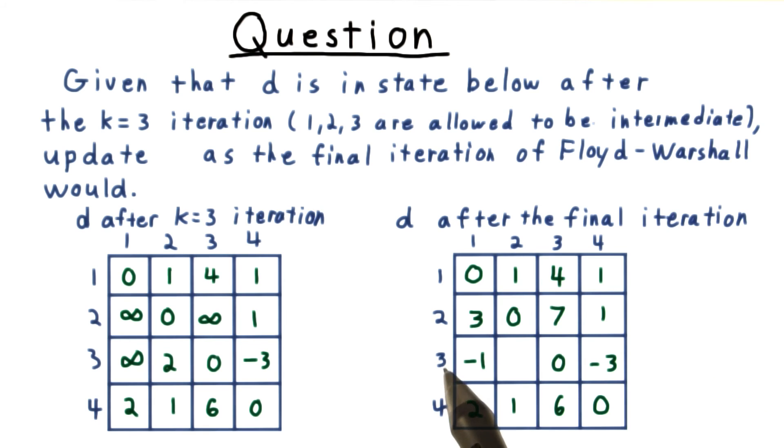Lastly, we have that going from 3 to 2 used to cost 2, but we can improve on that by going to 4 first, which costs negative 3, and then going from 4 to 2, which costs 1, for a total of negative 2. And that completes the answer.